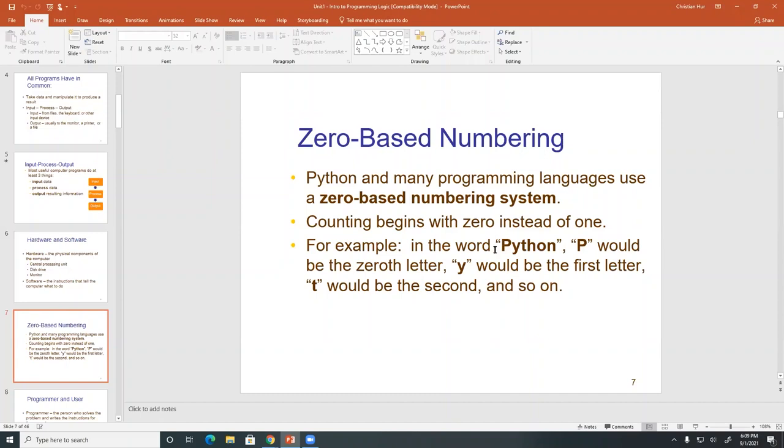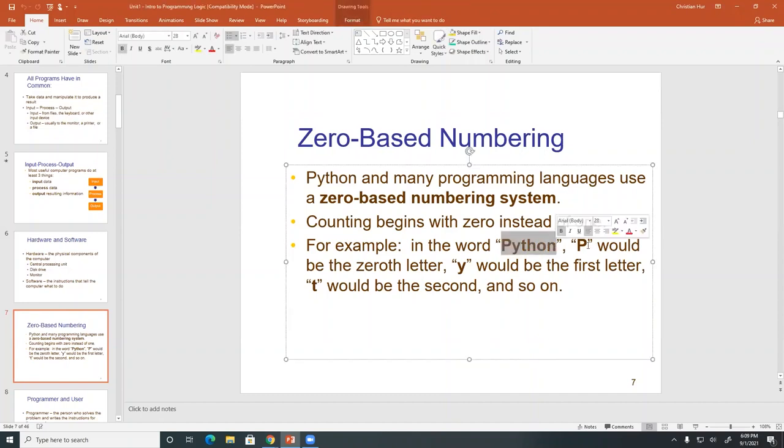So if you were to count this word Python, then the P, the capital P here is in the zero position. And we call it zero position as zero index.